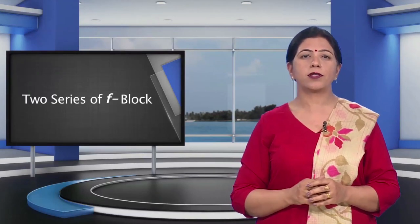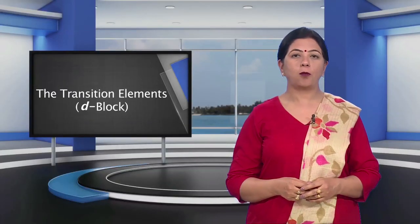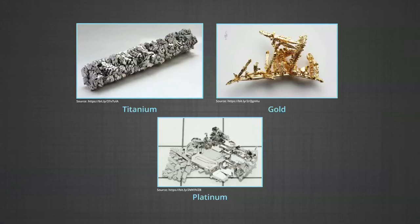The presence of partly filled D or F orbitals in their atoms sets the study of the transition elements and their compounds apart from the main group elements. However, the usual theory of valence as applicable to the main group elements can also be applied successfully to the transition elements. Various precious metals such as silver, gold and platinum, and industrially important metals like iron, copper and titanium, form part of the transition metals.